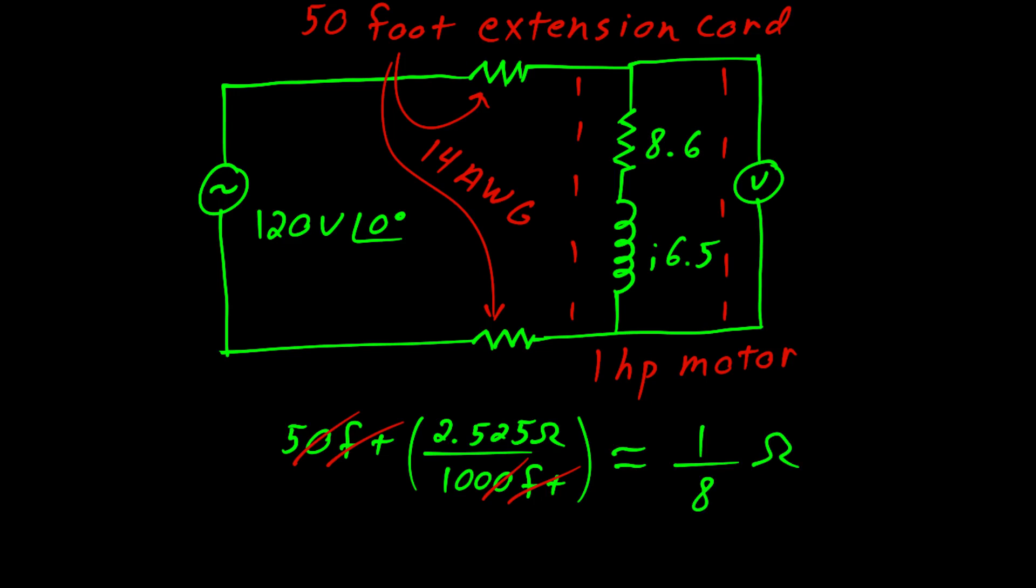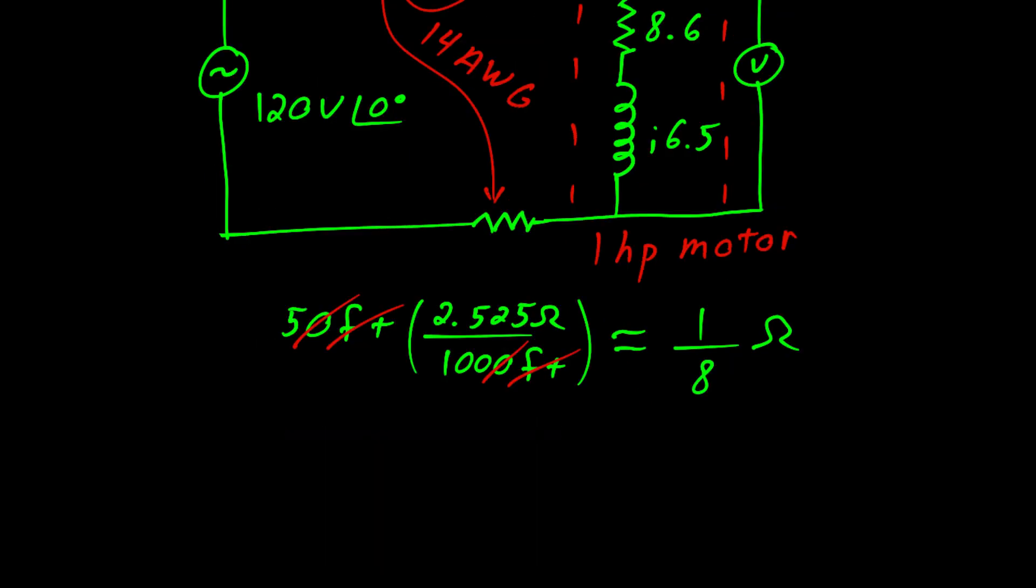That's an eighth of an ohm for the strand on the top and an eighth of an ohm for the run on the bottom. Our objective is to find the voltage as measured at the motor. So we can do that in a series of steps.